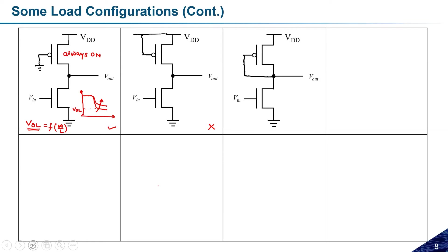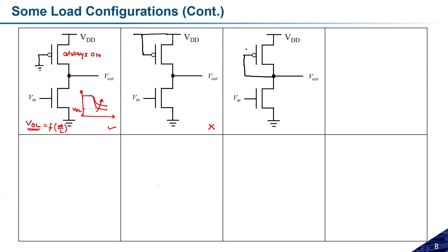For this pMOS transistor: gate terminal, source, and drain — if you see, Vgs = Vout − VDD, and Vds = Vout − VDD as well.